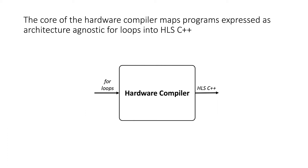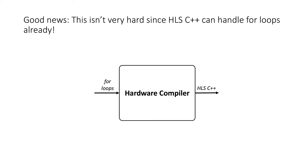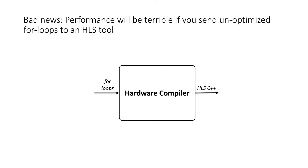The core of the hardware compiler will map programs expressed as architecture-agnostic for loops into HLS C++. That's great because HLS C++ can handle for loops already — you could theoretically get a working hardware compiler by taking a bunch of loops and emitting them as C++ code with a few more curly braces. The bad news is that the performance is going to be absolutely terrible if you send unoptimized for loops to an HLS tool.